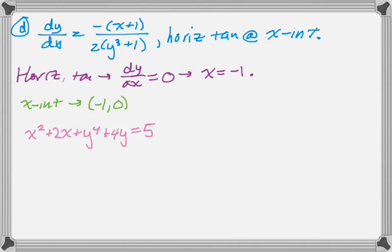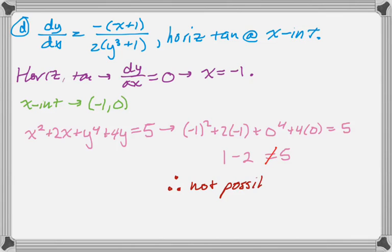If we get something true, the answer is yes. If false, it's not possible. We plug in, and when you simplify that, you get 1 minus 2 equals 5, but that's definitely not true. Since it's not true, it is not possible for this curve to have a horizontal tangent line where it hits the x-axis.